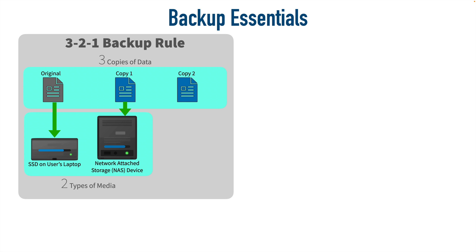And the 1 in the 3-2-1 backup rule means that we should have one off-site copy. This might be in the cloud — maybe we store a copy on Dropbox, Google Drive, or Amazon AWS. We're going to have one copy not at our location, so if there were some disaster that happened at our location, there would still be a copy somewhere else.